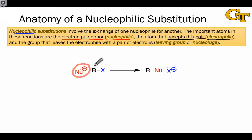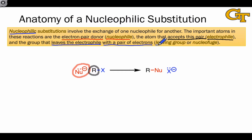The atom that accepts the pair of electrons from the nucleophile — in other words, where the curved arrow ends that starts from the nucleophilic lone pair — is called the electrophile. In this general scheme, the electrophile is R. R may be part of a carbon group, it may be a carbon atom, or it may be some other type of heavy atom, for example sulfur or phosphorus. The group that departs from the electrophilic molecule with a pair of electrons — the group that becomes a nucleophile on the product side — is known as the leaving group or nucleofuge. X is known as the leaving group or nucleofuge.